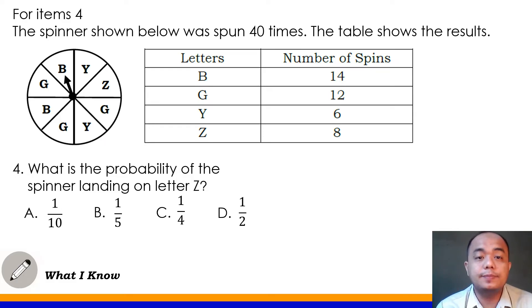Let's have number 4. The spinner shown below was spanned 40 times. The table shows the result. So yung spinner natin dito class, pinaikot siya ng 40 times. So ito yung risulta. Maibinigay na na risulta pagkatapos paikutin yung ating spinner dito 40 times. So yung letter B, lumabas siya 14 times. Yung letter G natin, lumabas siya 12 times. Yung Y, 6 times. Ang Z, 8 times. Yung ibang letters, hindi sila lumabas. Now the question for number 4 is, what is the probability of the spinner landing on letter Z?